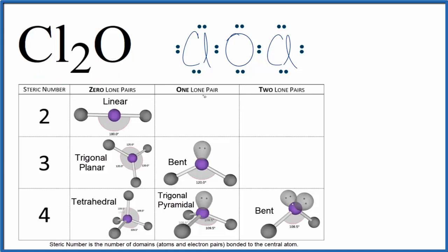So we start with our Lewis structure here. We're looking at the central atom, the oxygen here. We can see that there are two single bonds to chlorine atoms, and then we have two lone pairs.